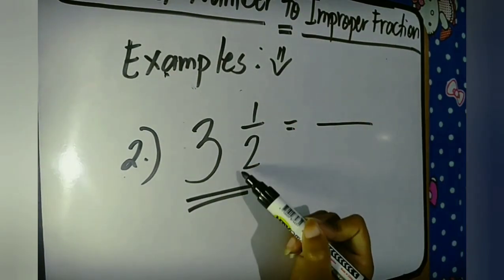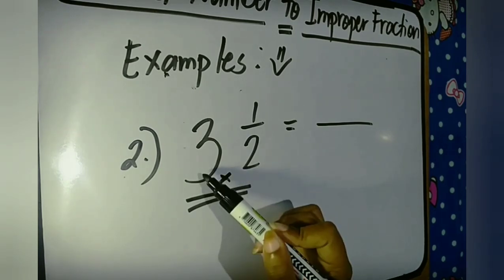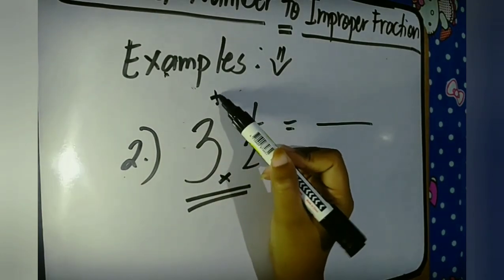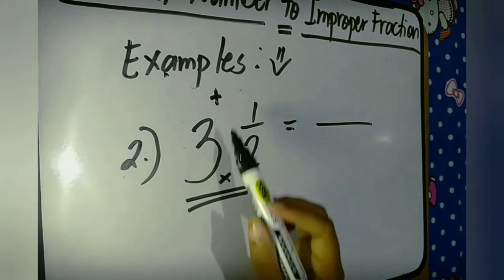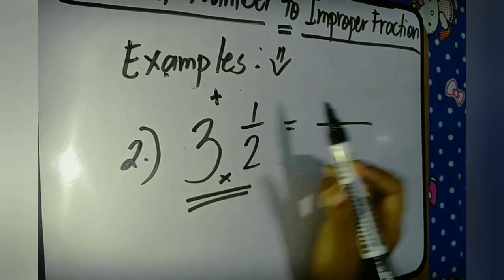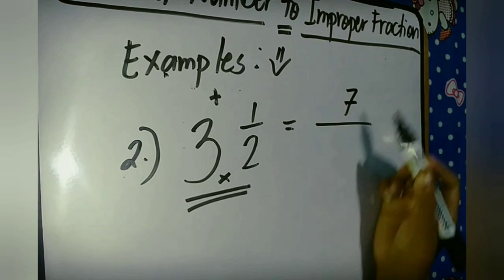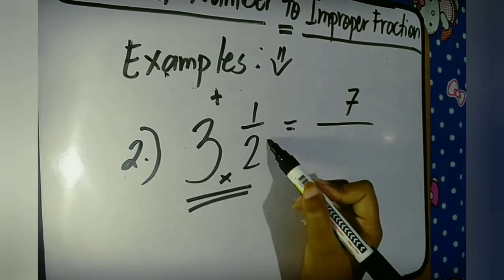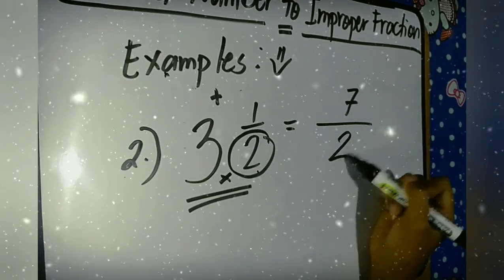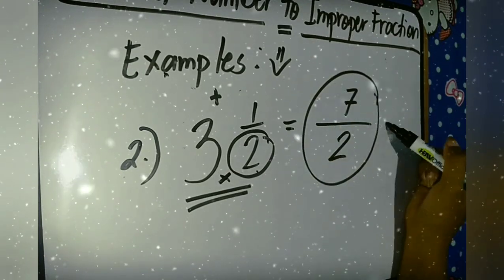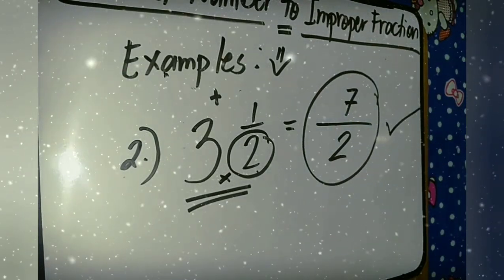Two times three is six, plus one is seven. Copy the denominator two. That's the improper fraction of three and one half: seven over two.